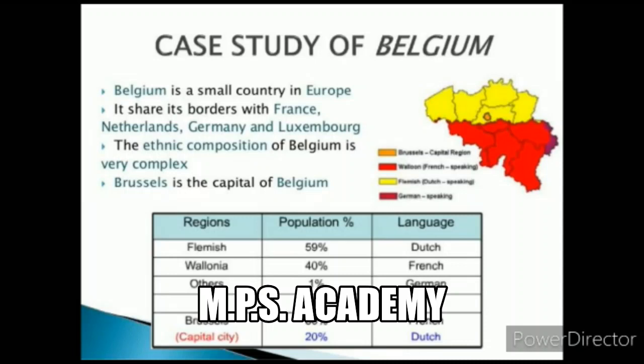Belgium's ethnic composition is very complex. 'Ethnic' refers to people sharing one language and culture. Brussels is the capital of Belgium. In the Flemish region, 59% of the population speaks Dutch. In Wallonia, 40% are French speakers. About 1% speak German. In Brussels alone, 80% are French speakers and 20% are Dutch speakers.